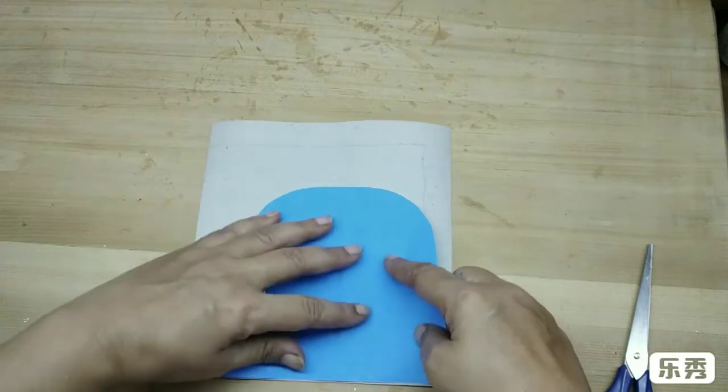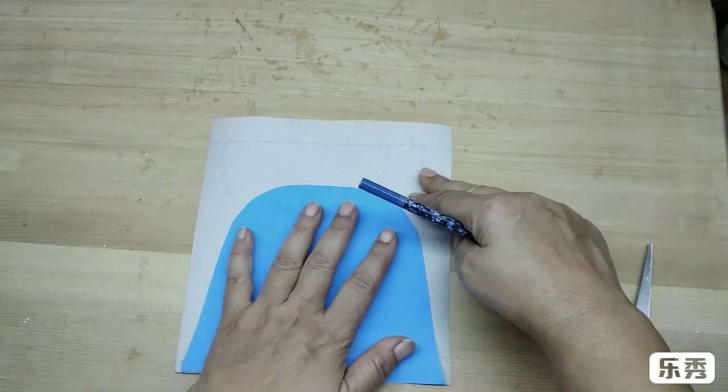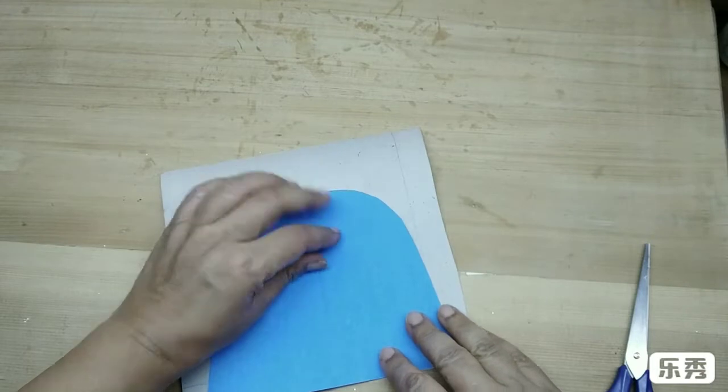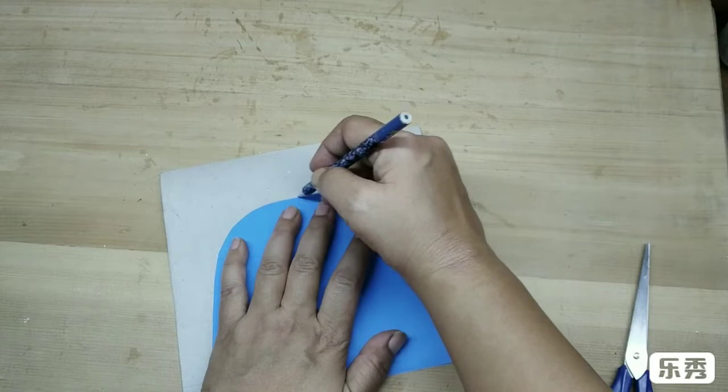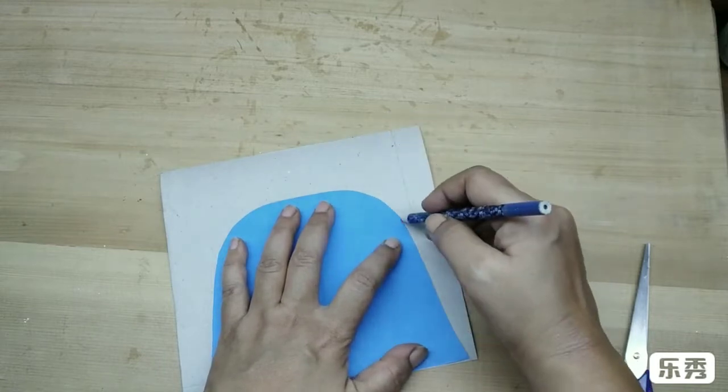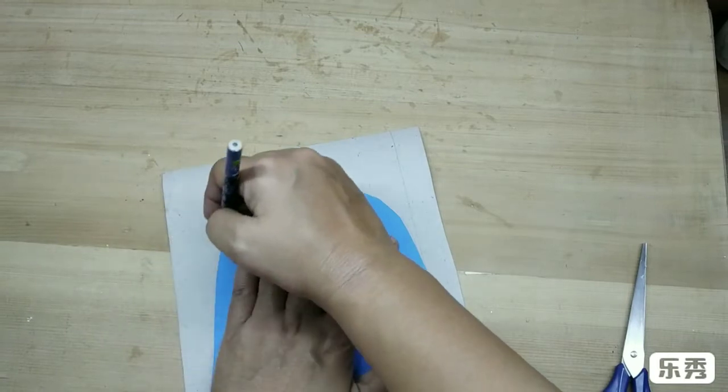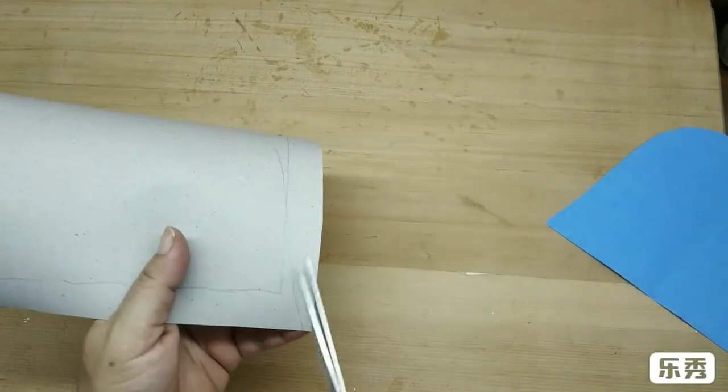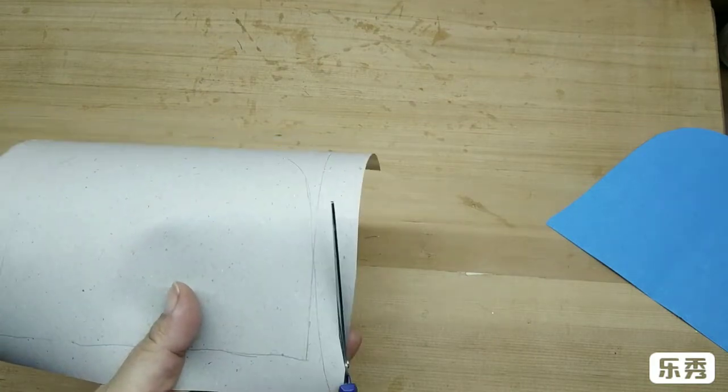And I'm just going to trace this on it. I'll just cut out slightly bigger than the outline that I've traced out, so it should be bigger than this.